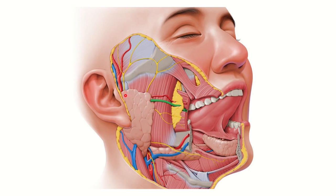In this picture, we can see the parotid gland, the submandibular gland, and the sublingual gland — these are the major salivary glands around the oral cavity. The parotid duct emerges from the parotid gland.